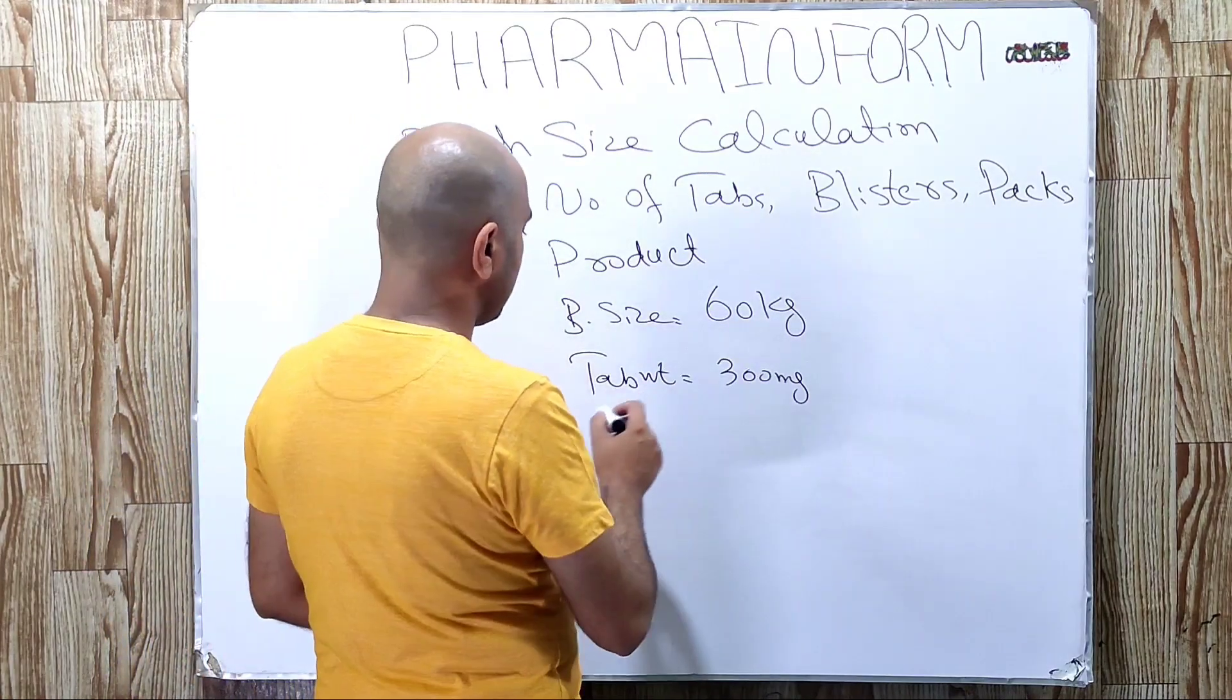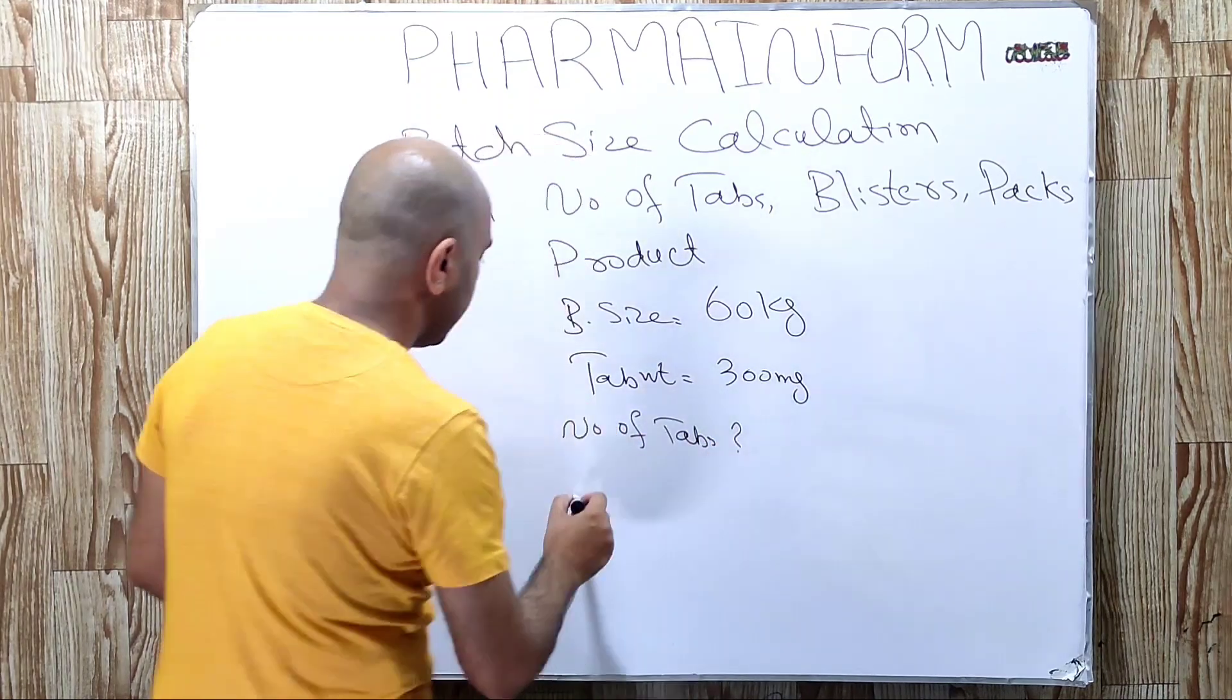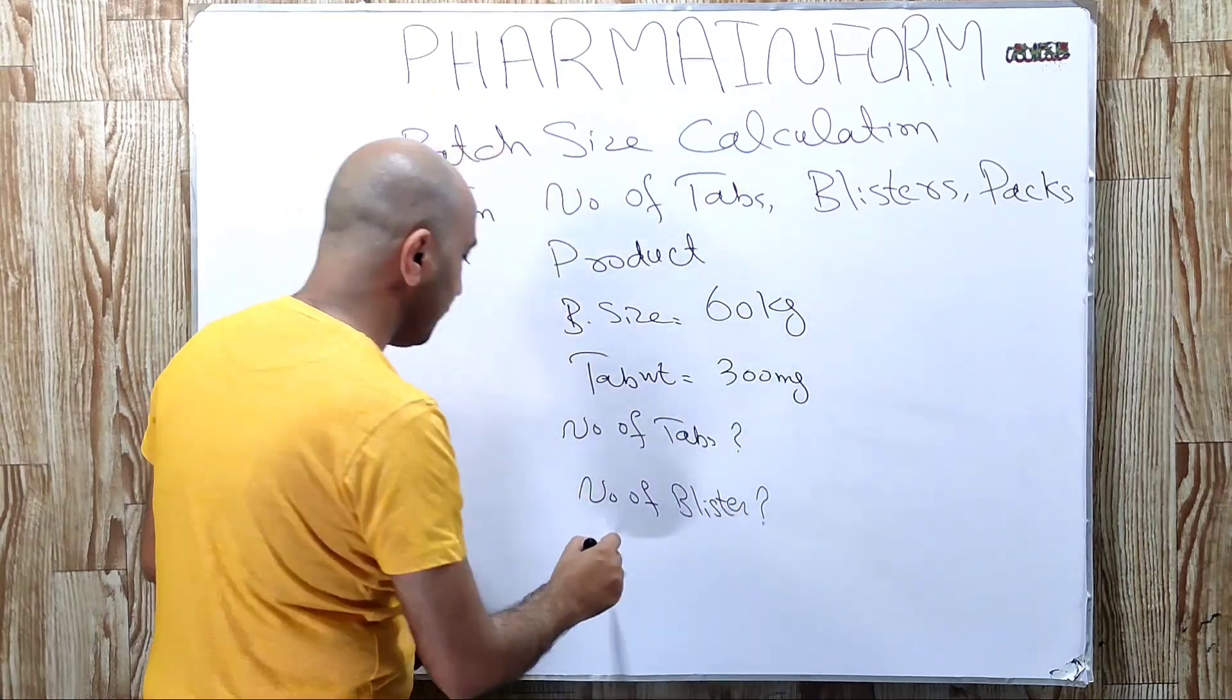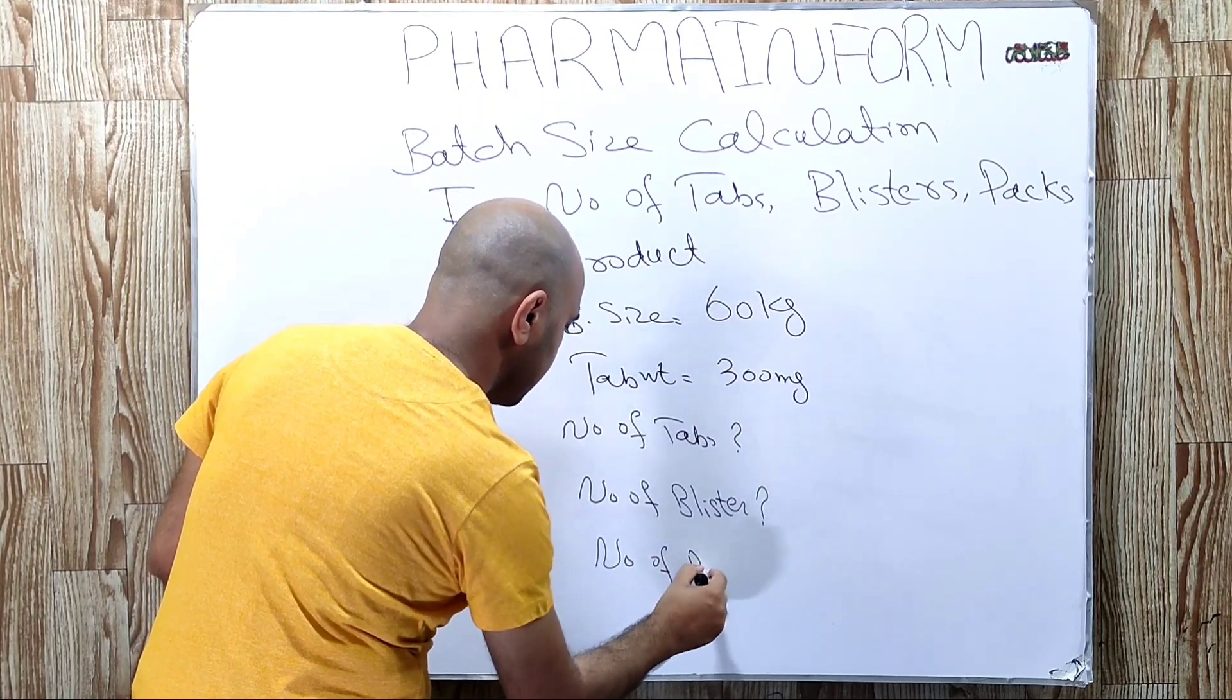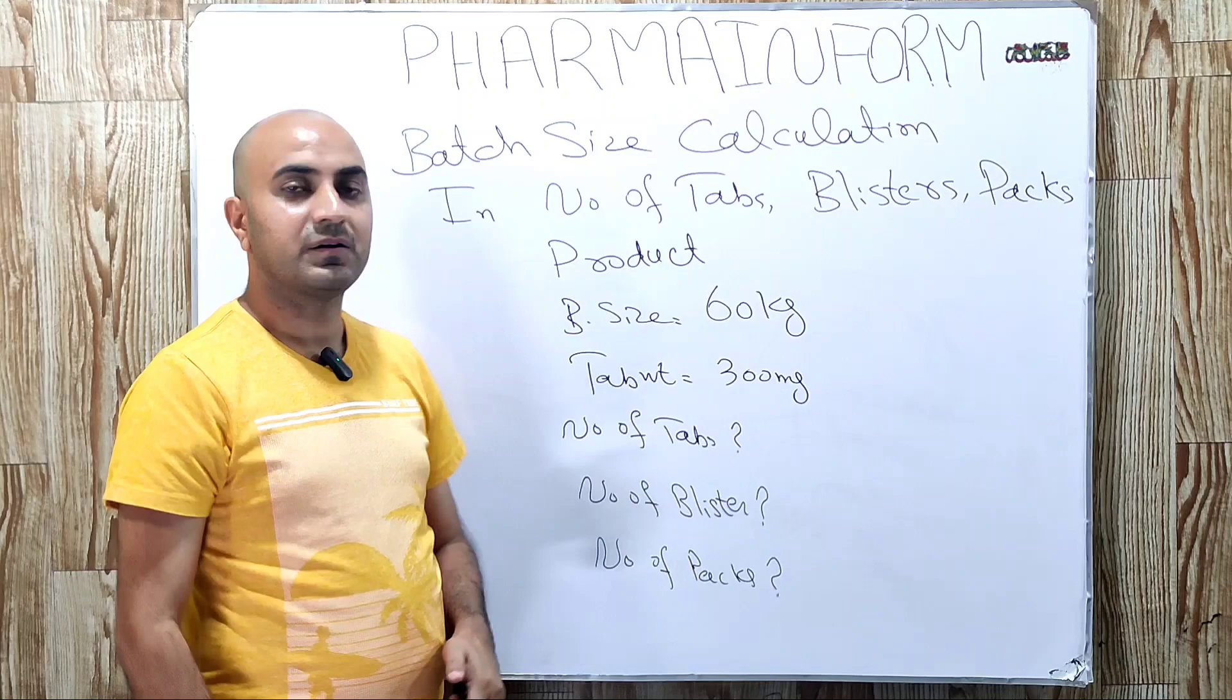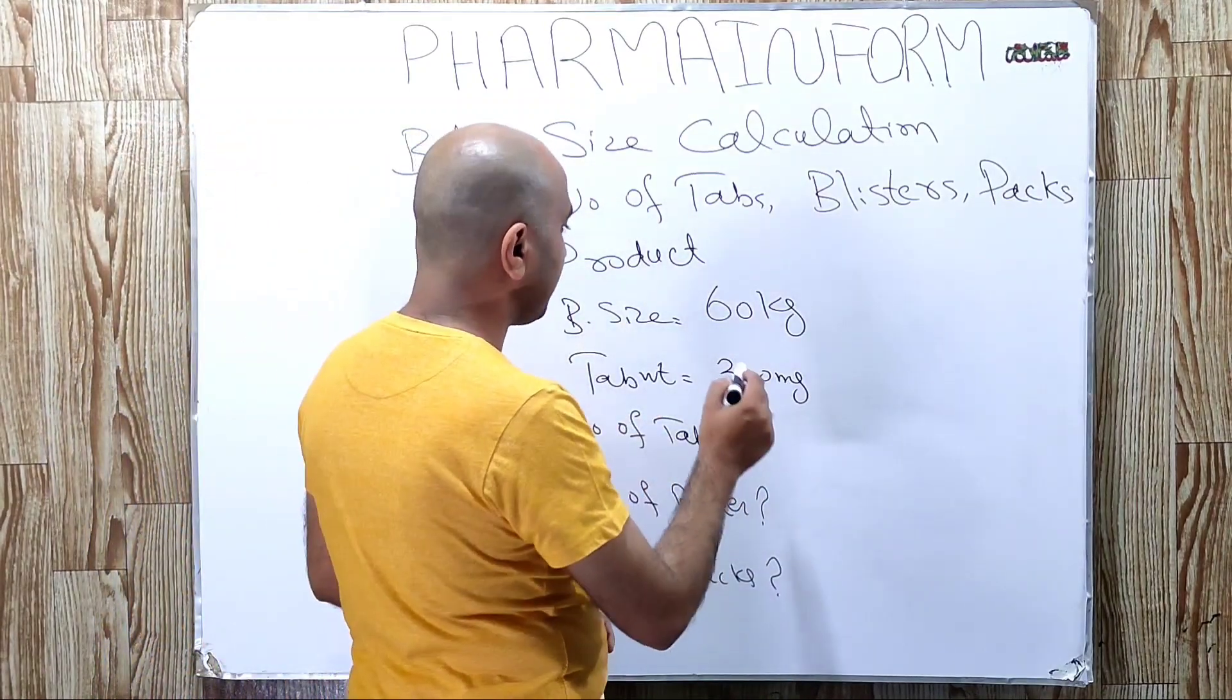We are asked to calculate number of tablets, number of blisters, and number of packs. How will we calculate all these? Let's start from the number of tablets.